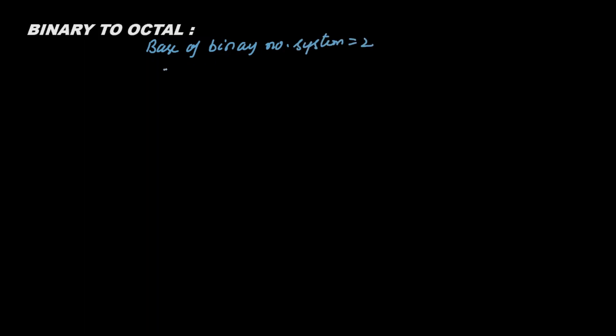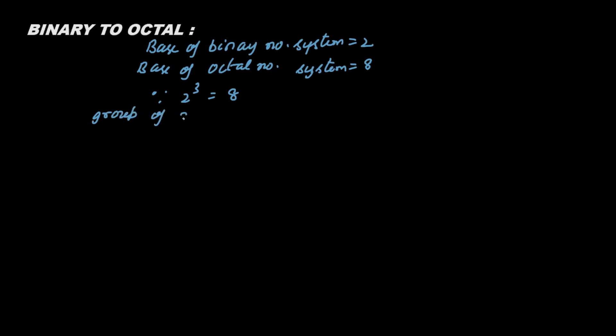Next we come to binary to octal conversion. For this, we first need to understand the bases involved. The base of the binary number system is two, and the base of the octal number system is eight. Since two to the power three equals eight, a group of three bits is equivalent to one octal digit.